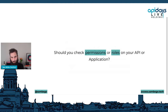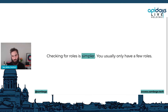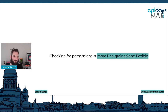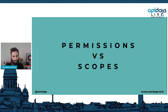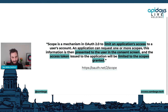Should you check permissions or roles on your API? The answer is: it depends. Checking for roles is simpler — you usually have only a few roles. But checking permissions is more fine-grained and flexible. As your product grows, roles may be split or renamed, requiring more maintenance. Permissions tend to stay stable longer, so checking permissions is often the better long-term approach.